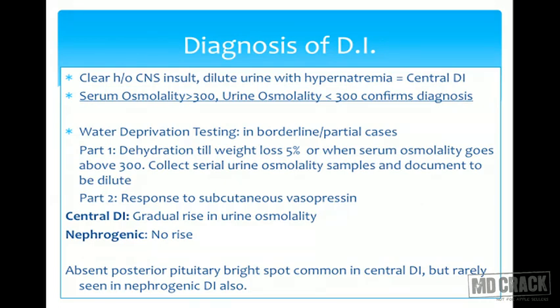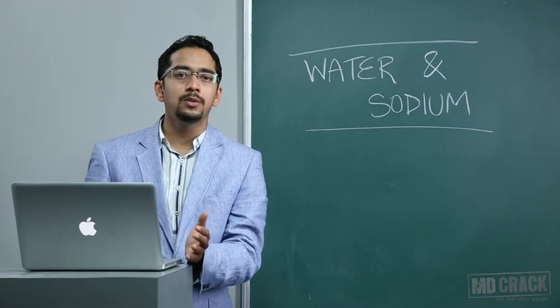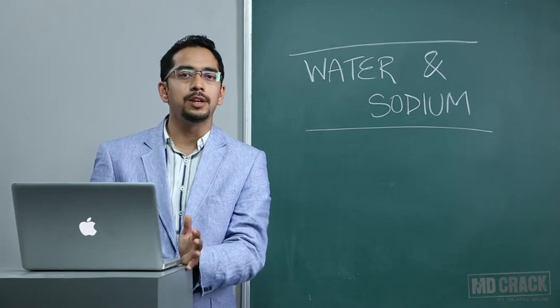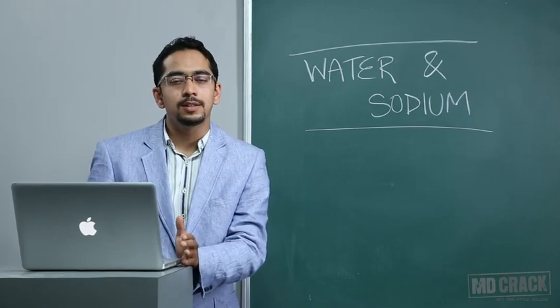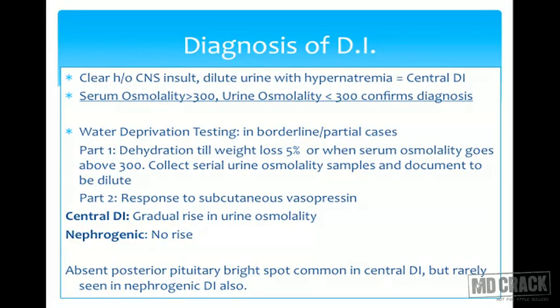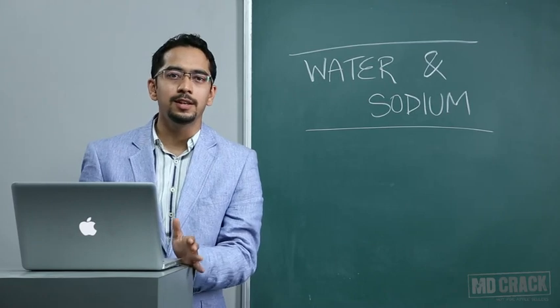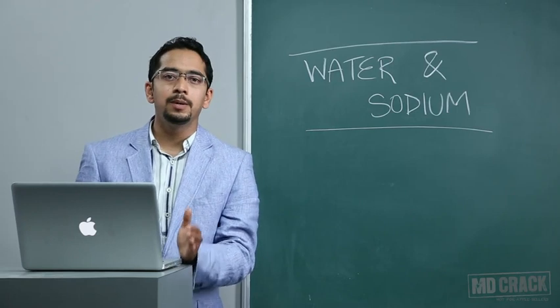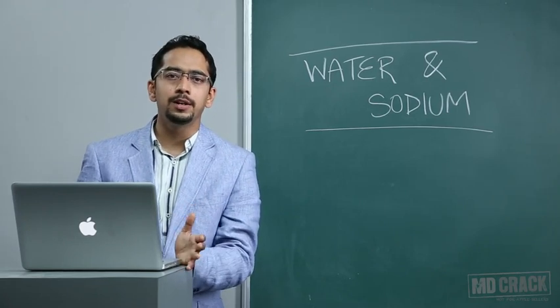Diabetes insipidus presents with polyuria and polydipsia, and many other conditions can mimic it. For example, psychogenic or compulsive polydipsia as a habit or psychological disorder. We have to differentiate diabetes insipidus from primary polydipsia. If we have clear-cut history of CNS insult with dilute urine and hypernatremia, the diagnosis is central diabetes insipidus. If serum osmolality is above 300 and urine osmolality below 300, it confirms diagnosis. But in clinical practice, diagnosis is often not clear-cut.